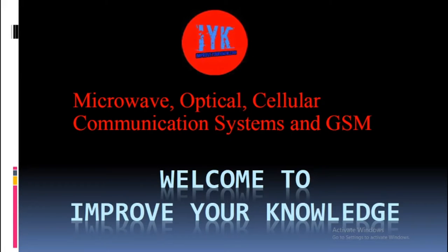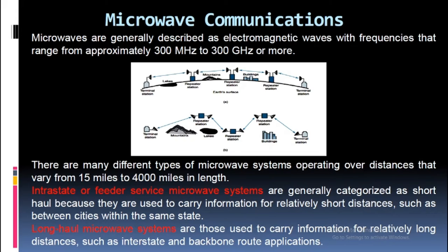Welcome to Improve Your Knowledge. Microwaves are generally described as electromagnetic waves with frequencies that range from approximately 300 MHz to 300 GHz or more. There are many different types of microwave systems operating over distances that vary from 15 miles to 4,000 miles in length.